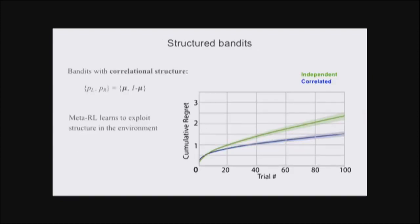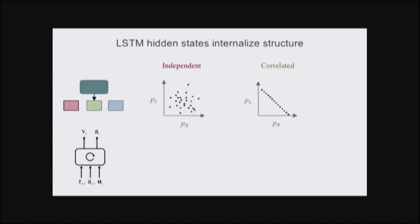Let's move beyond simple independent bandits, because one benefit of being able to learn a prior over the distribution of environments is that the prior learned will exactly match the complexity of the structure that exists in the training tasks. In this graph, the green curve is the model trained on independent bandits as before. The blue curve indicates performance when we train on bandits in which the two arms are exactly negatively correlated. You can see that meta-RL performs more optimally on a test distribution matched to the distribution it was trained on.